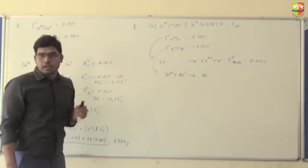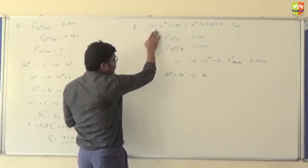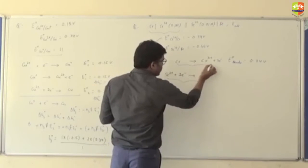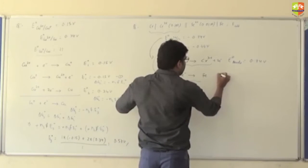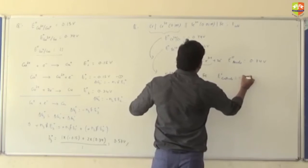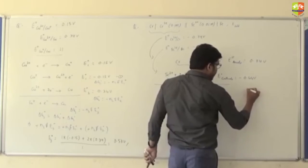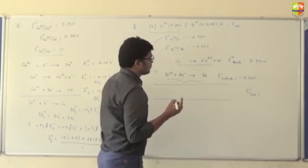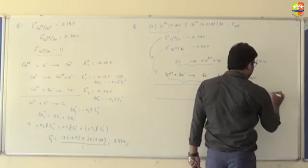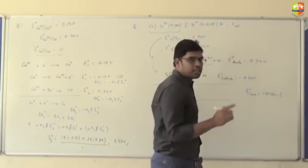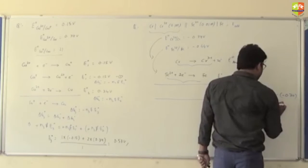E° of cathode is −0.44 volt. E°cell = E°cathode − E°anode (reduction potential) = −0.44 − (−0.74) = 0.30 volt. When you add the two half-reactions, the electrons won't cancel directly, so multiply the Cr reaction by 2 and the Fe reaction by 3, giving a total electron exchange of n = 6. The overall cell reaction is 2Cr(s) + 3Fe²⁺(aq) → 2Cr³⁺(aq) + 3Fe(s).